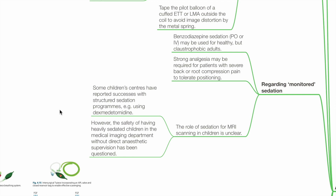Regarding monitored sedation: benzodiazepine sedation may be used for healthy but claustrophobic adults. Strong analgesia may be required for patients with severe back pain or root compression pain to tolerate positioning. The role of sedation in MRI scanning in children is unclear. Some centres have reported success with structured sedation programs, for example using Dexmedetomidine (Precedex). However, the safety of having heavily sedated patients in an MRI scanner without direct anaesthetic supervision has been questioned.